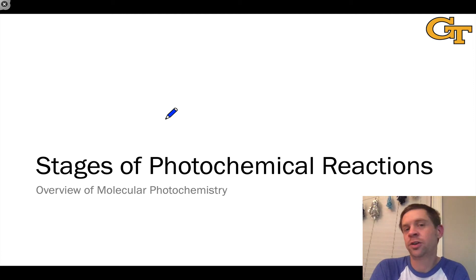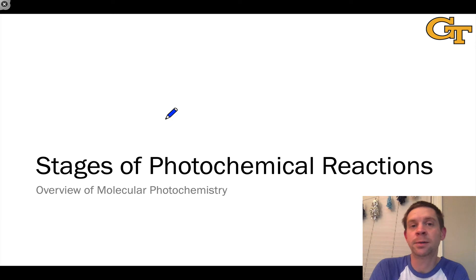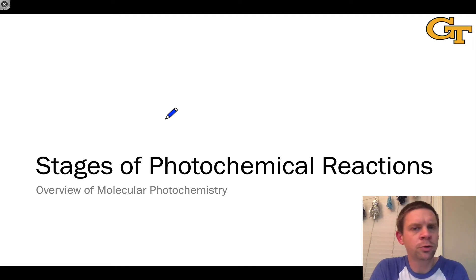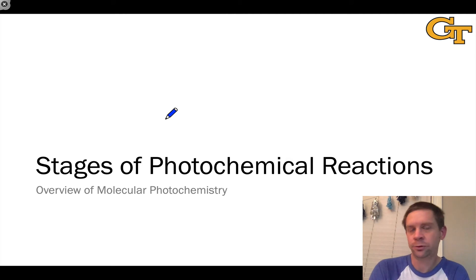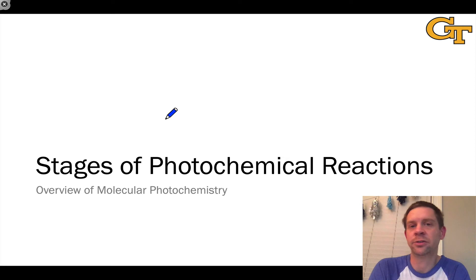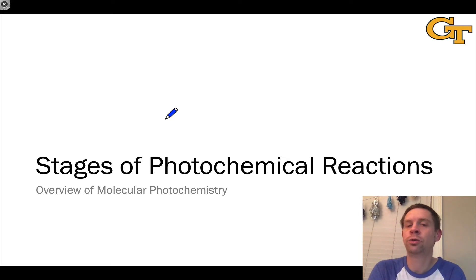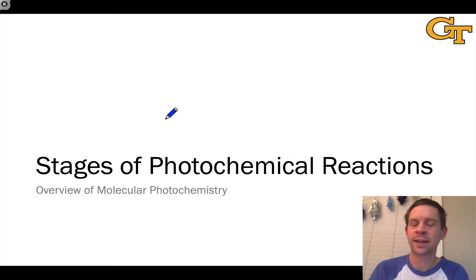In this video, we're going to look at a very general picture of how a photochemical reaction takes place and develop a very broad mechanistic paradigm for the vast majority of photochemical reactions. Generally speaking, photochemical reactions occur in three stages, and we're going to define those stages in this video. It's going to be a major goal of this course to really get under the hood of each of these stages and understand what's going on in detail for different types of photochemical reactions.